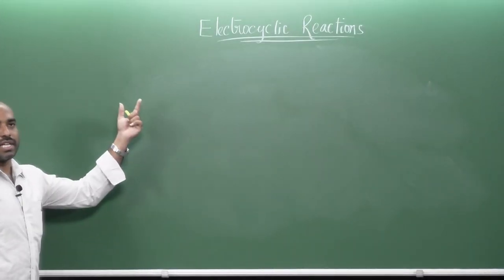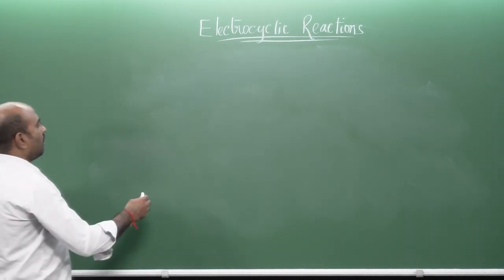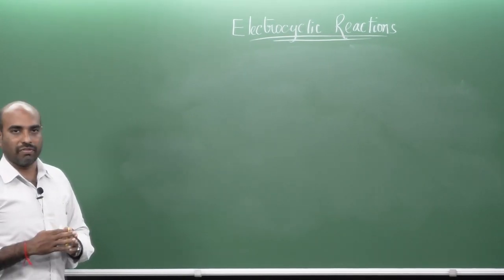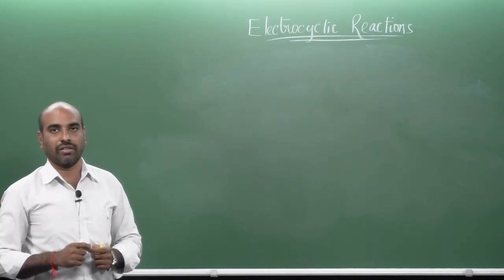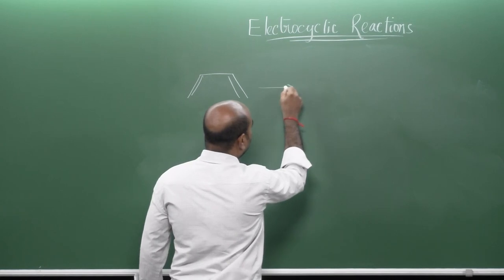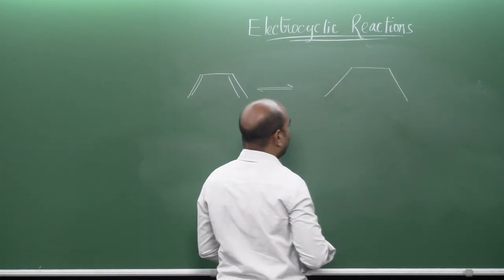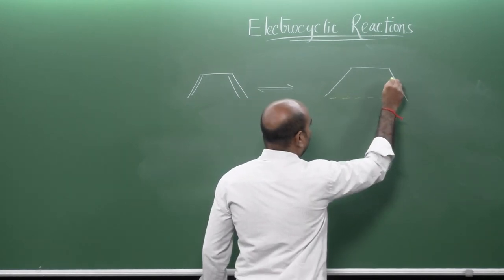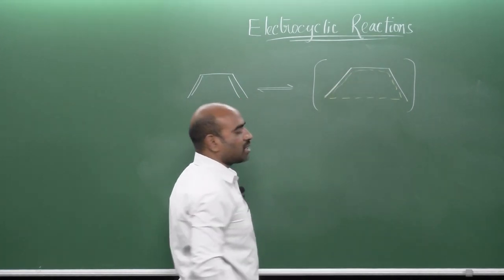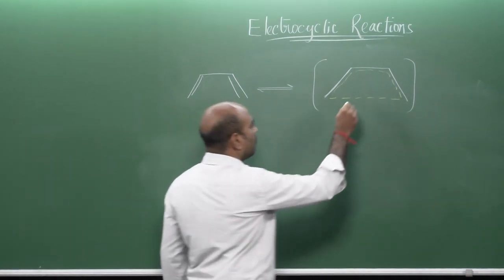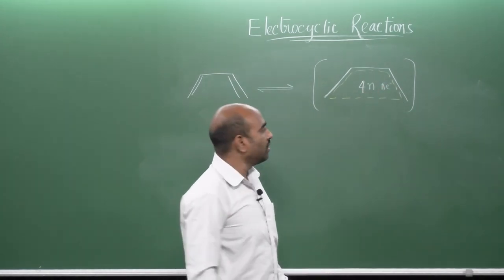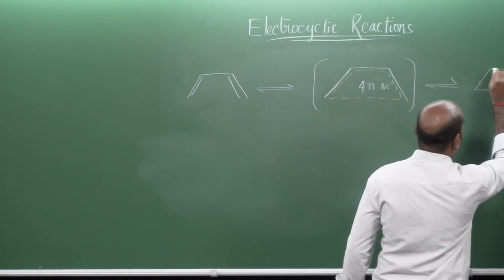Electrocyclic reactions are categorized into two types: one based on ring opening and ring closing, which we have discussed; and the other type of categorization is based on the involvement of number of pi electrons. If you consider 1,3-butadiene, it shows a transition state where 2 pi bonds are involved. For 2 pi bonds, there are 4 pi electrons. Therefore, it is considered a 4n pi electron system.